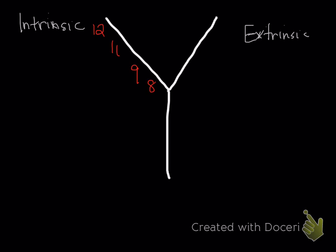The extrinsic pathway includes something called tissue factor — abbreviated TF — which comes from the tissue, and then factor 7. These pathways meet at the common pathway, and notice that both the extrinsic and intrinsic pathways share the common pathway, so you can't get to the end unless you go via it. The common pathway includes factor 10, factor 5, and then factor 2 — and of course, 10 divided by 5 is 2.